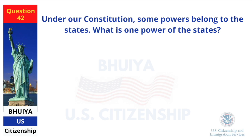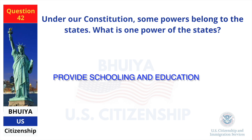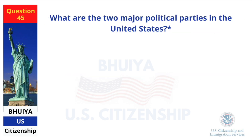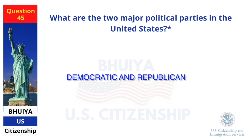Under our Constitution, some powers belong to the states. What is one power of the states? Provide schooling and education. What are the two major political parties in the United States? Democratic and Republican.